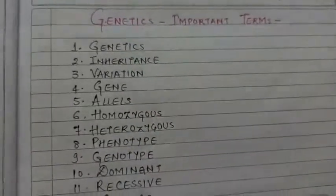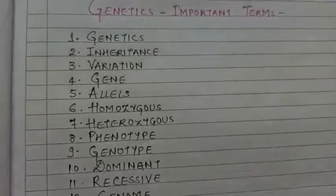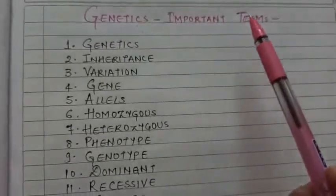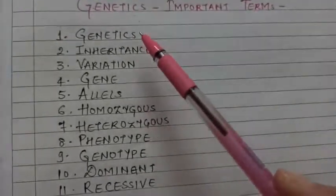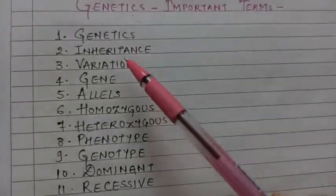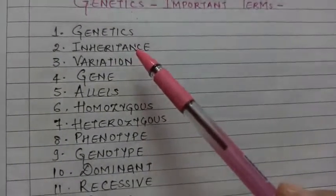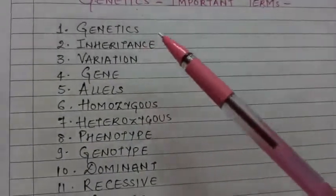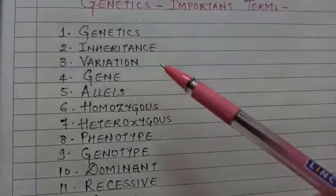Once this list is discussed, I will discuss these terms in detail one by one. So these important terminologies are: first is genetics, second is inheritance. You'll have to learn how to pronounce them and then we will talk about them in detail.